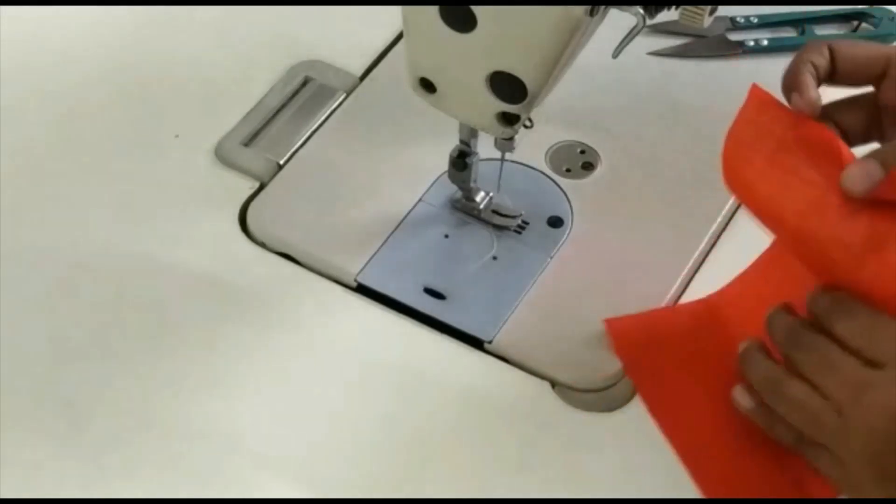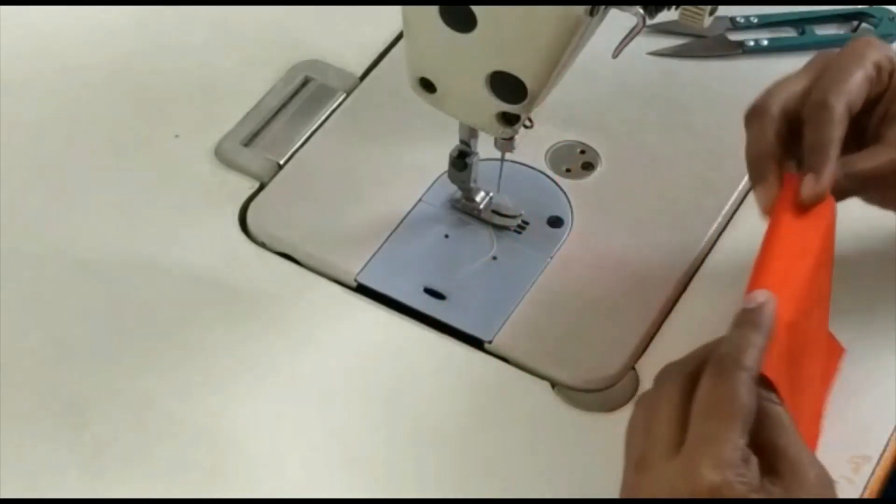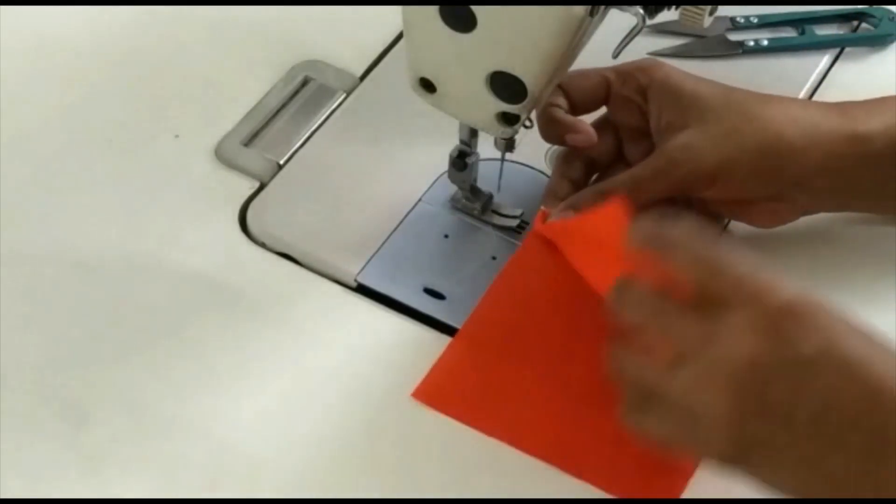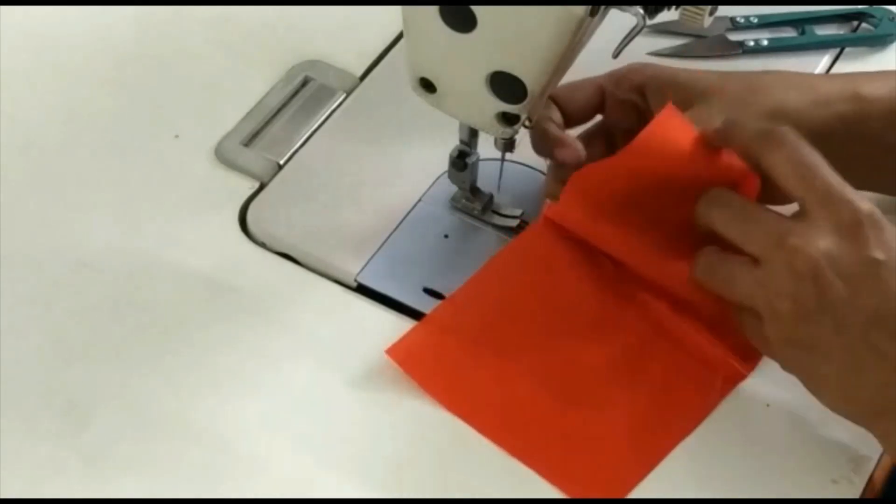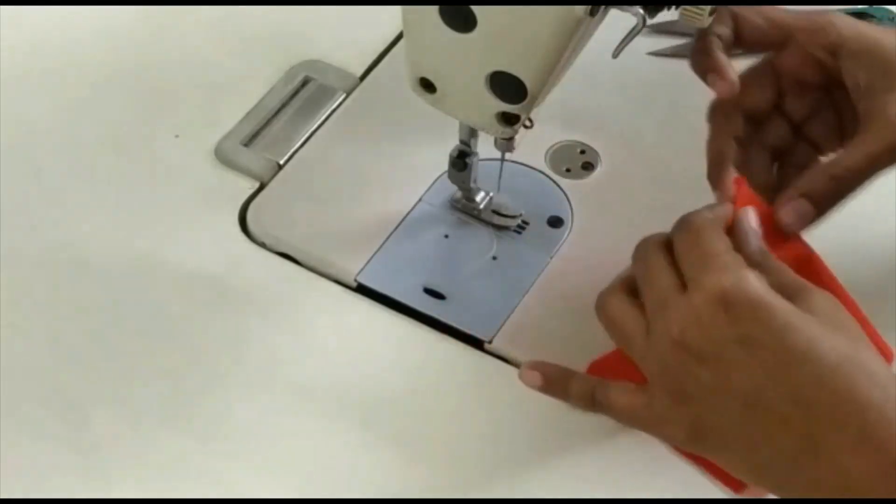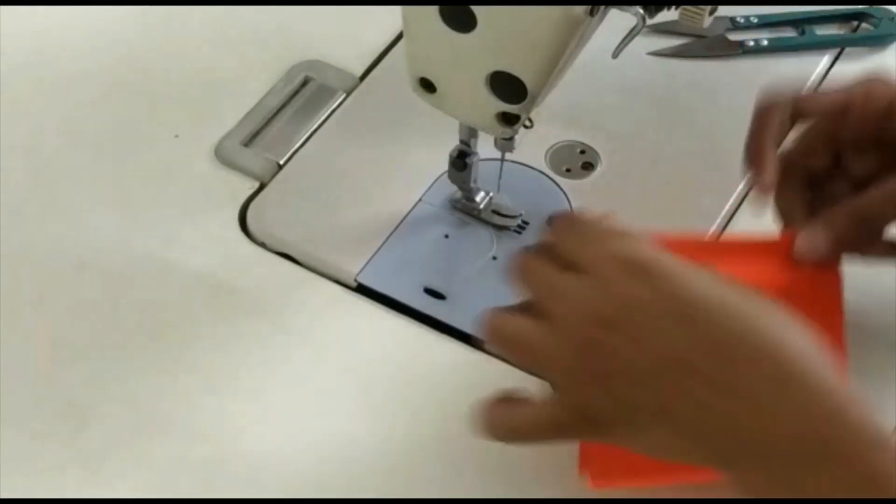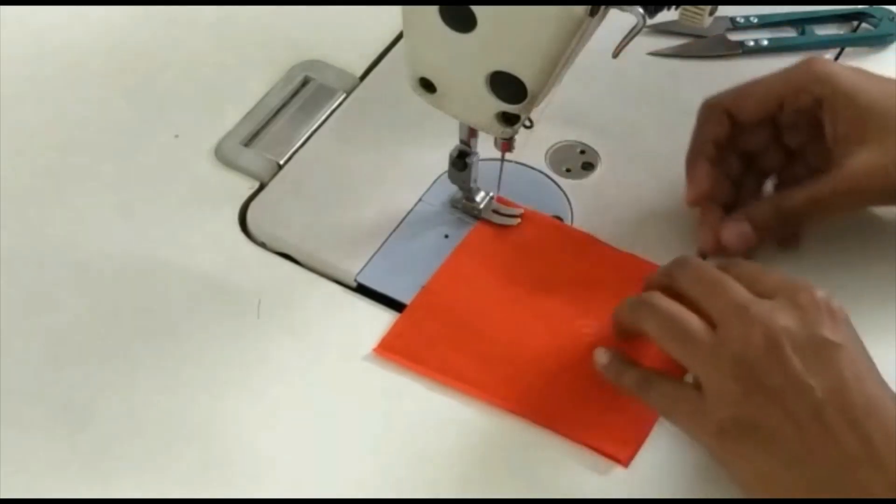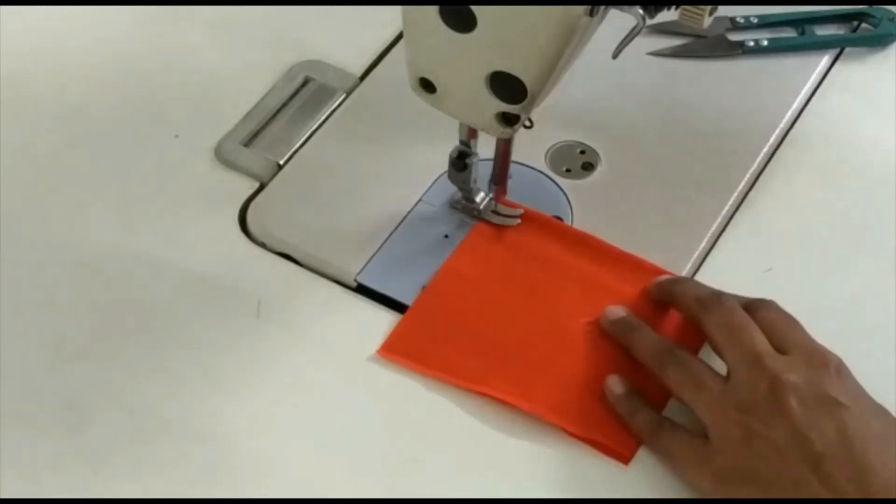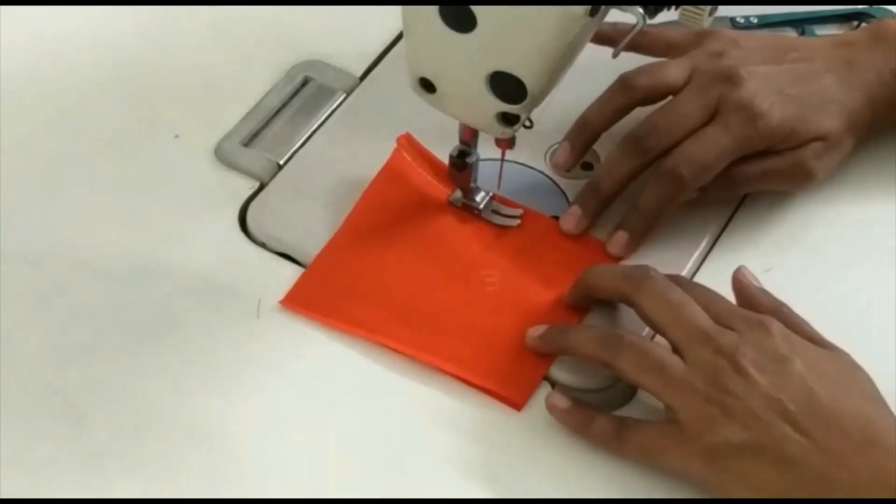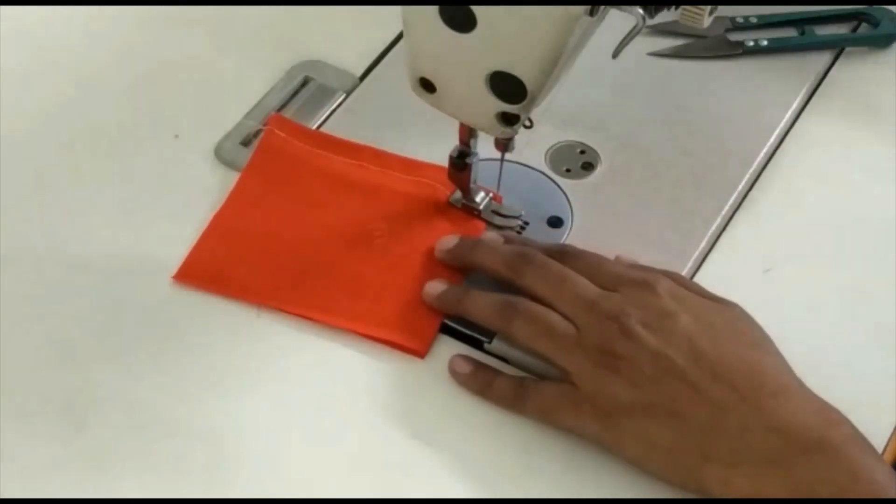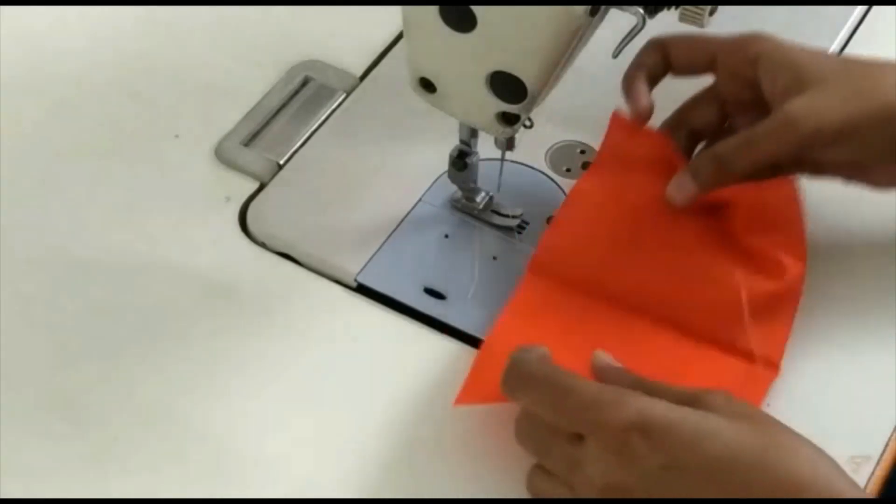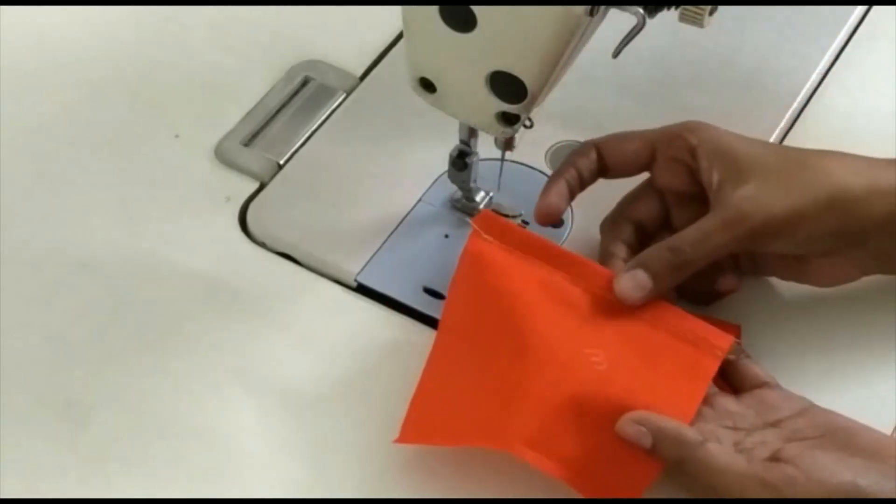Now open the fabric and fold it towards the right side and start stitching. While stitching, make sure the raw edges should be concealed completely. This is how it looks, the raw edges closed completely.